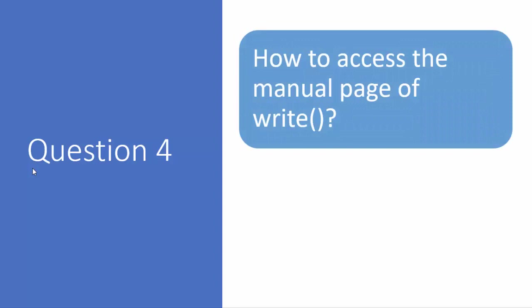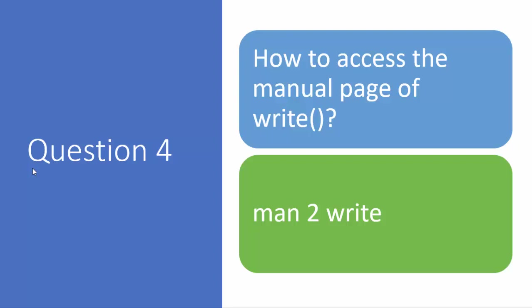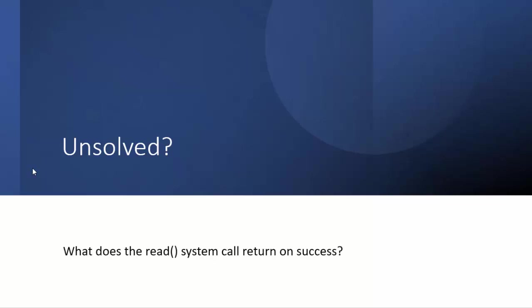Question number four: how do you access the manual page of the write system call, or any system call? You write 'man 2' followed by the system call name. The second section of the manual pages is reserved for system calls. As an unsolved exercise: what does the read system call return on success? For write I've told you, so you should be able to figure out read on your own.